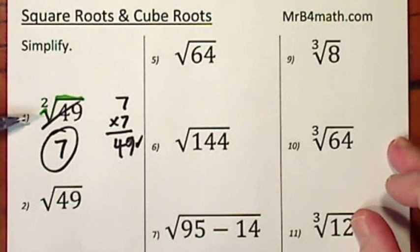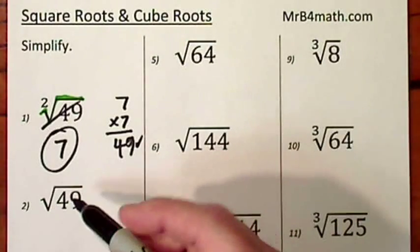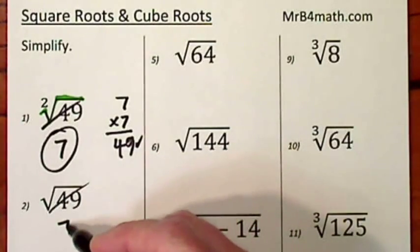By the way, this index of 2 is not required. If you simply have a radical symbol with no index indicated, then it's understood to mean the square root. So again, the square root of 49 is 7.